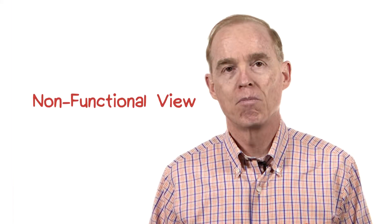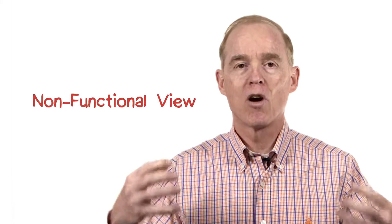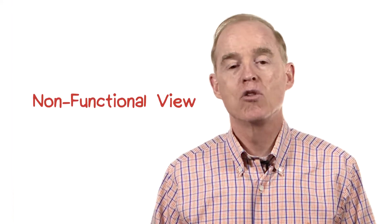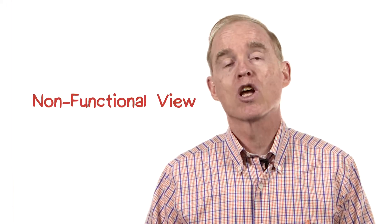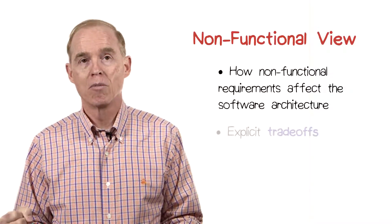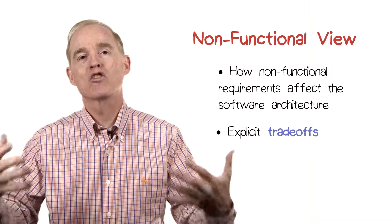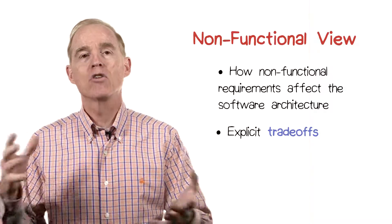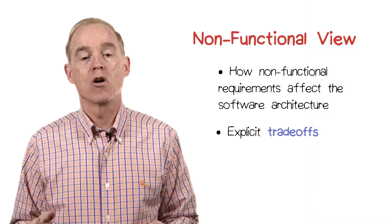The second view not listed by Cruchin, I consider to be quite important, and that's the non-functional view. In coming up with a software architecture, it's your responsibility not only to describe a system that is going to compute what it needs to compute, but also computed in a way that satisfies those non-functional requirements. Satisfying non-functional requirements is hard — it often involves some kind of trade-off, so you need to be expressing what the options are and how you've decided to trade things off.